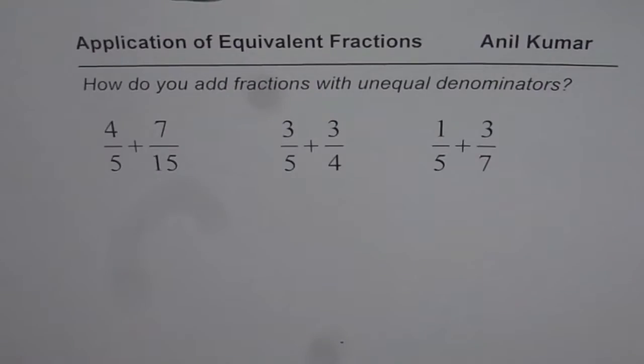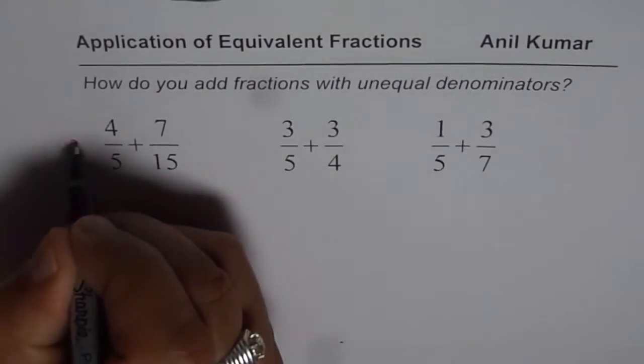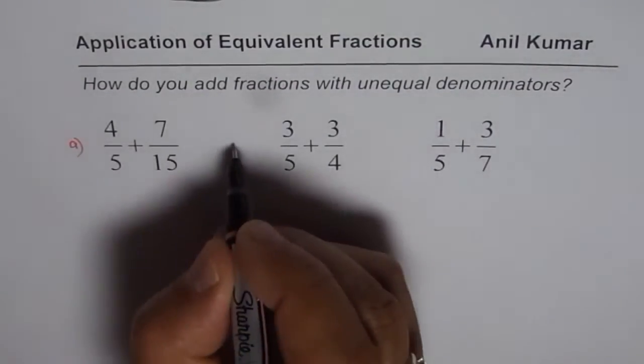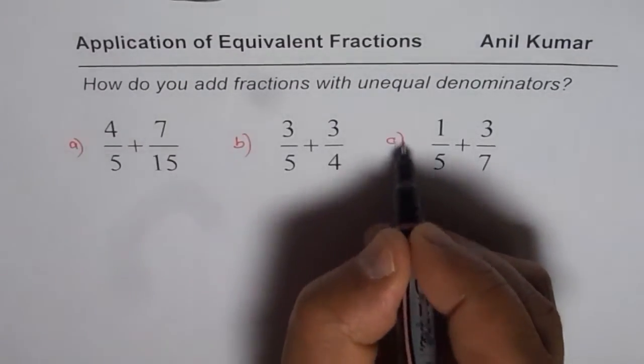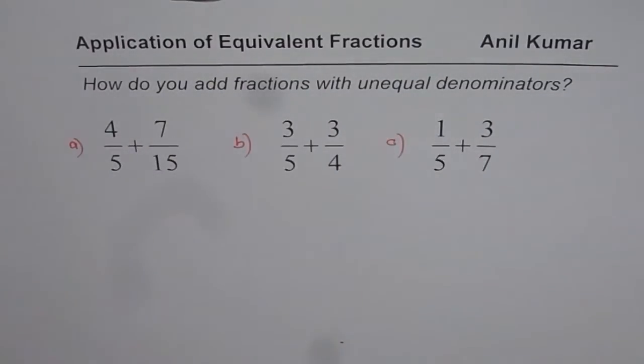So here we'll try to write fractions as equivalent fractions with same denominators and then we'll perform the operation of addition on the fractions. So we have three examples to practice. First one is 4 over 5 plus 7 over 15 and then we have 3 over 5 plus 3 over 4. C is 1 over 5 plus 3 over 7.